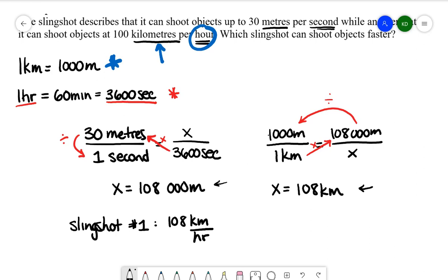Slingshot 2 only shoots it at 100 kilometers per hour. So therefore, we've now answered our question. Which slingshot can shoot objects faster? That will be slingshot 1.